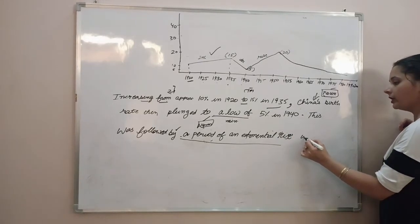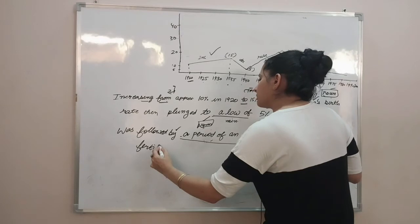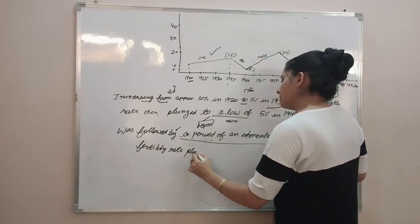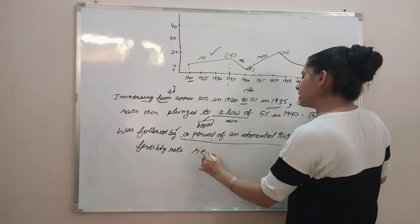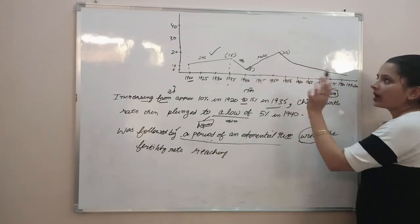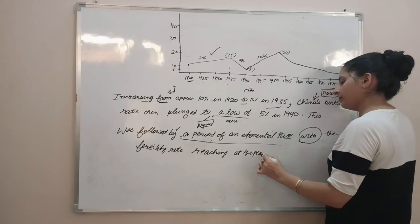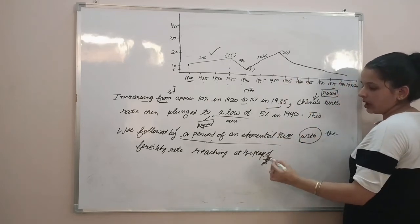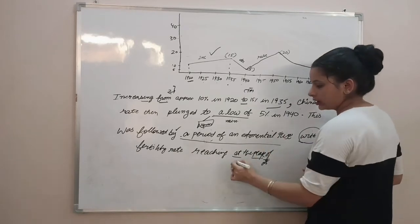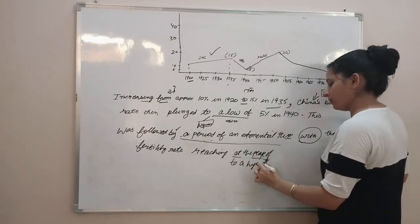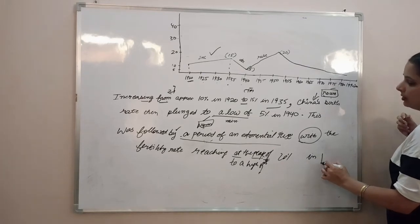We continue with 'with the fertility rate' — reaching the maximum, we can say 'reaching to a high of' or 'reaching at the peak of.' Note: 'peak' takes 'at,' and 'high' takes 'to a high of' — just like 'to a low of.' So the complete phrase is: 'with the fertility rate reaching to a high of 20% in 1950.' Notice how the figure is given here.